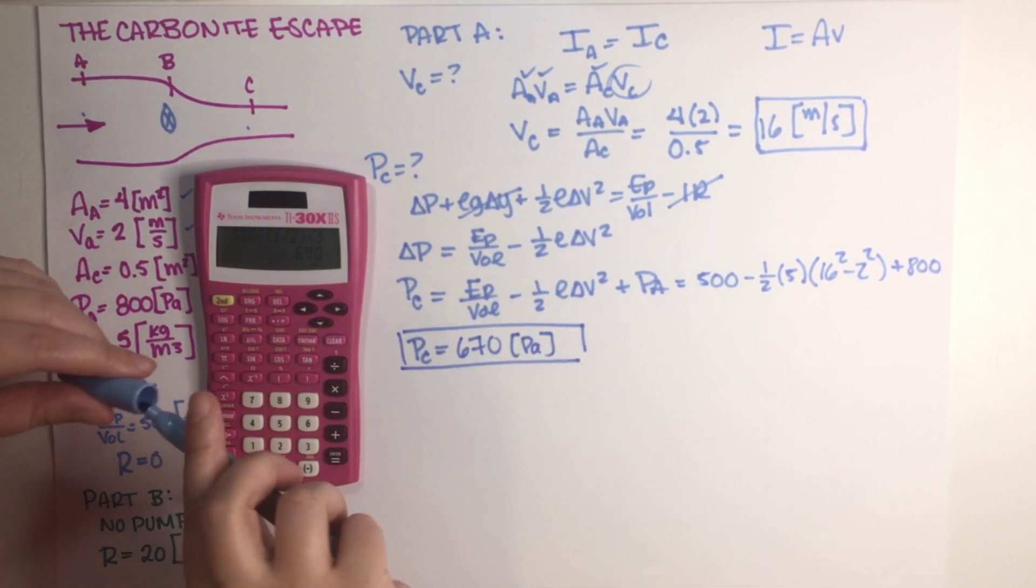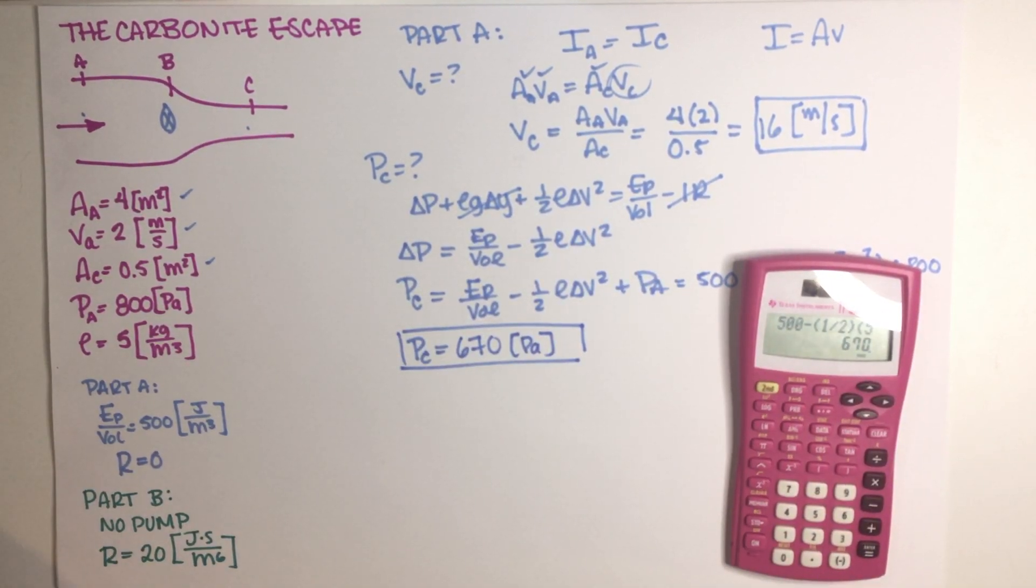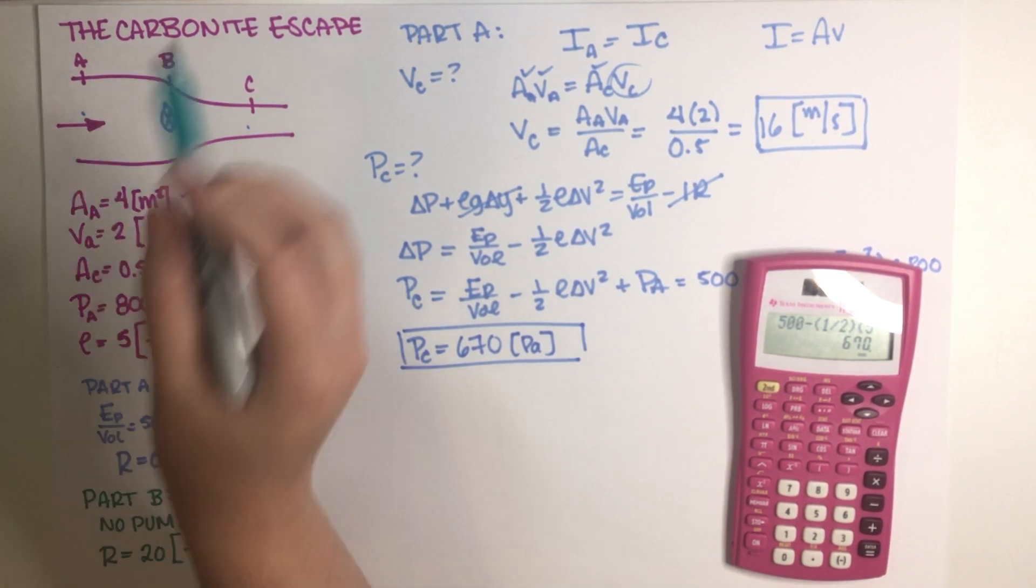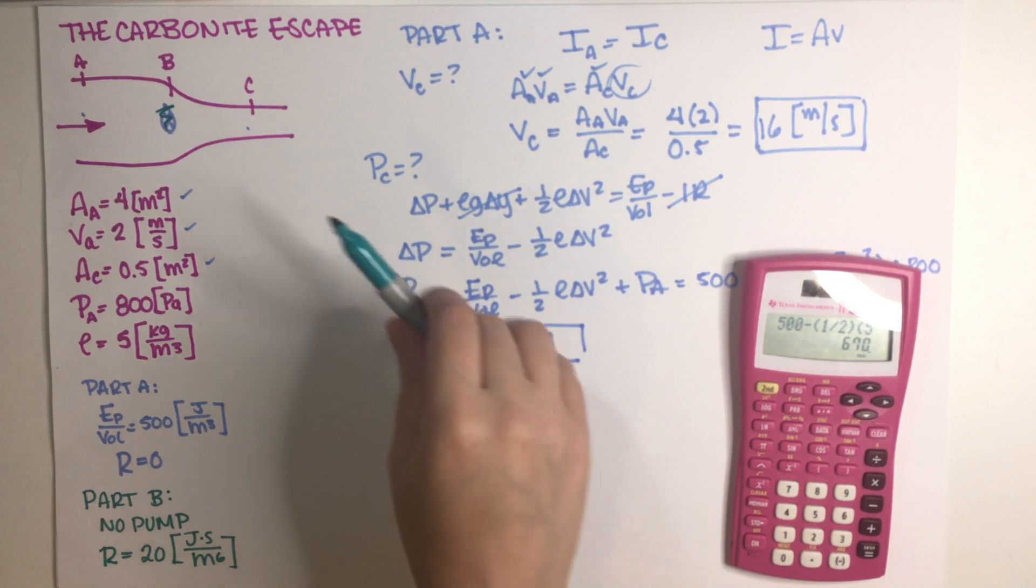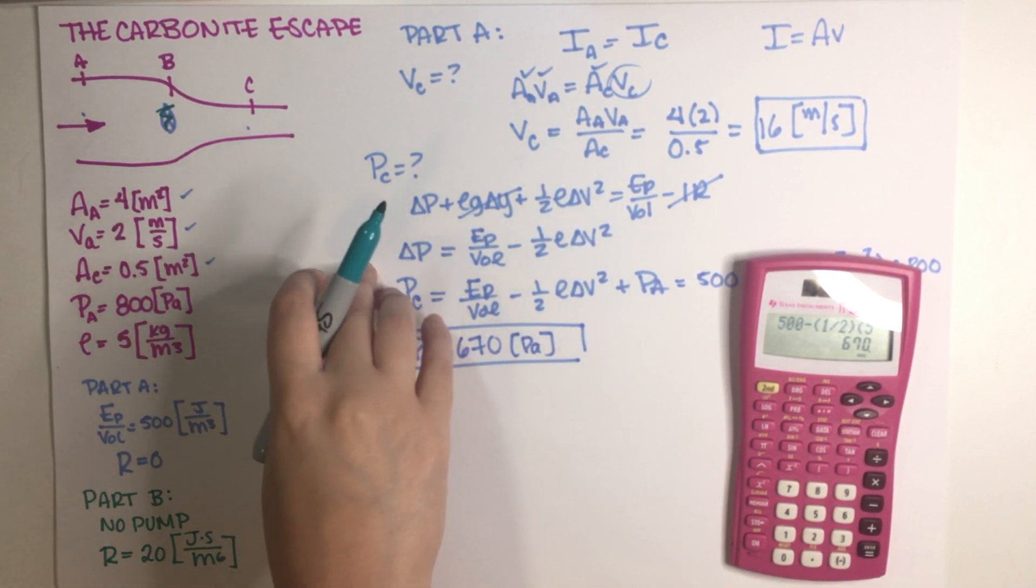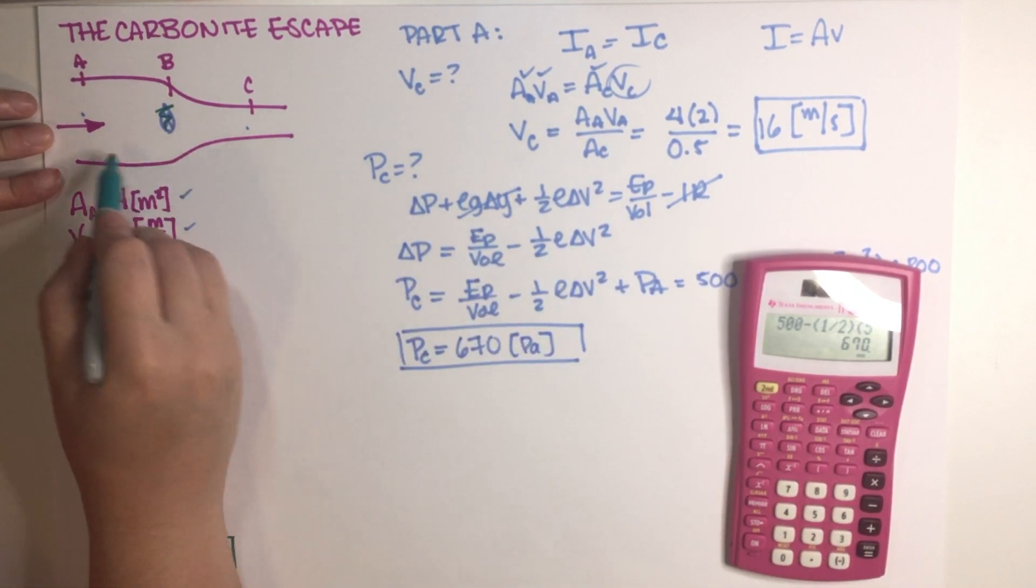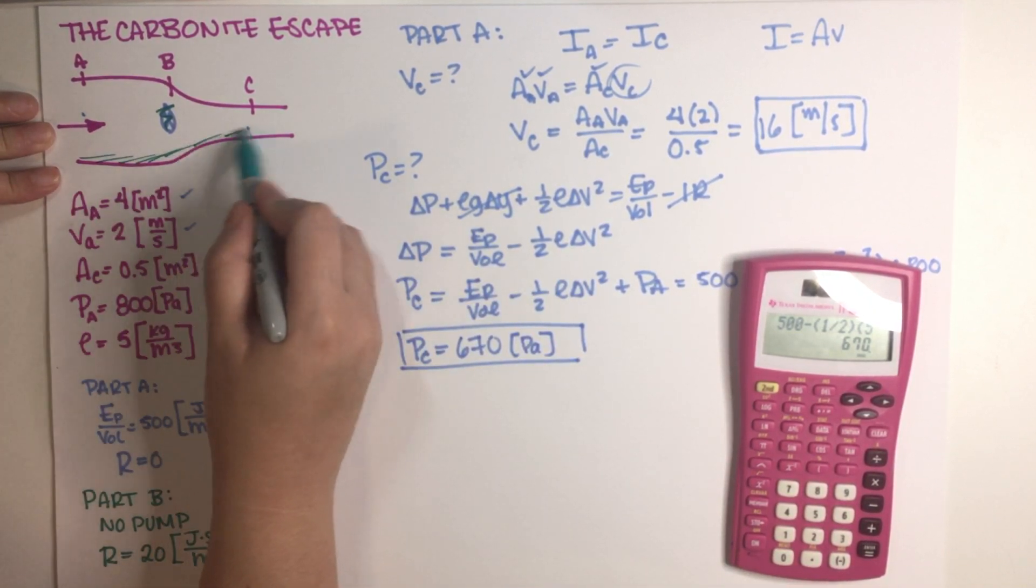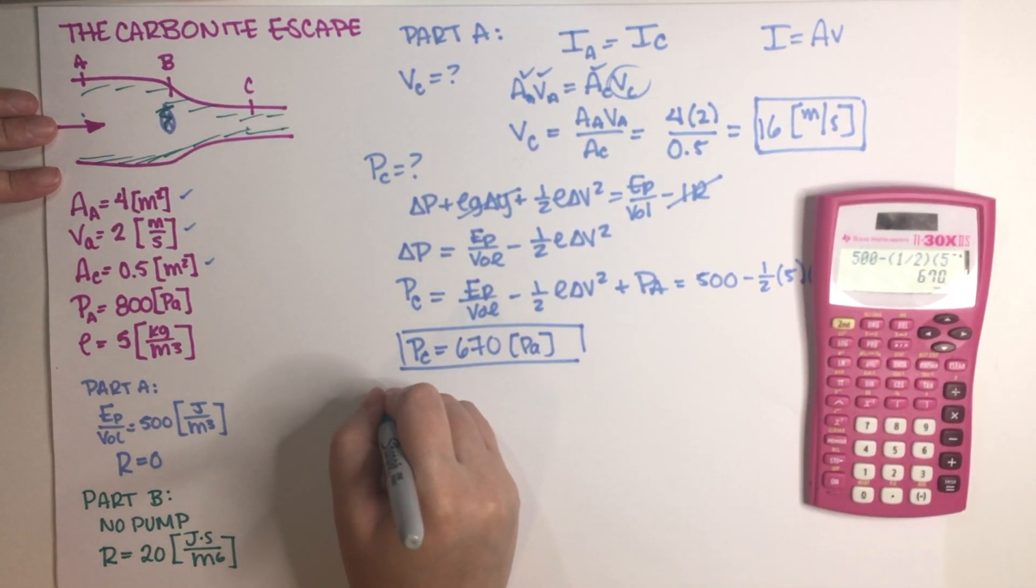All right, so now we're going to move on to Part B of this problem. So Part B reads as follows: This girl then thinks about what would happen to the fluid circuit if there were no pump, so now there is no pump, and she scuffed off the inside so that the pipe would have a total resistance of 20 joules second divided by meters to the sixth. So what would the flow rate of the original fluid at point C be in this situation, and what would be the pressure at point C in this situation? Okay, so now there is no pump but we do have a resistance all over the pipe.